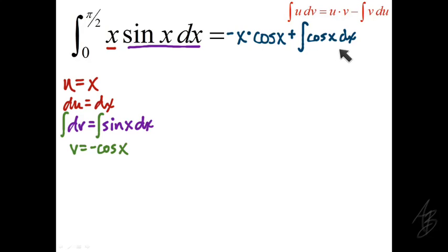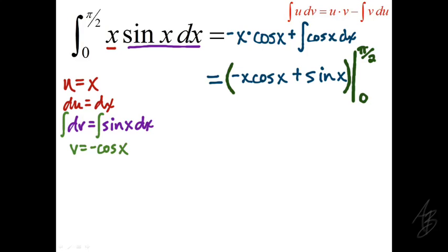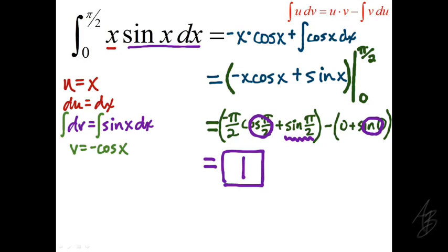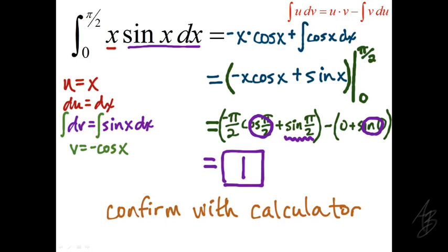Integrating cosine of x gives sine of x, so the indefinite integral is negative x cosine of x plus sine of x plus C. To evaluate the definite integral we drop the constant and evaluate between 0 and π/2. Plugging in, cosine of π/2 is 0 and sine of 0 is 0, so we're left with sine of π/2 which equals 1. The definite integral has a value of 1, which we can confirm with a calculator.